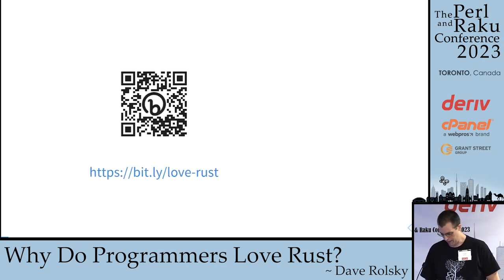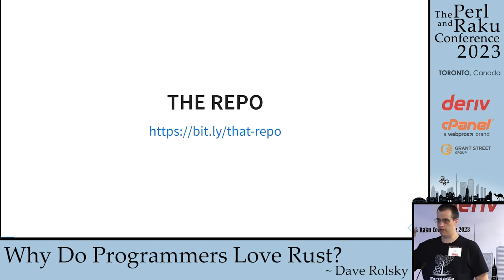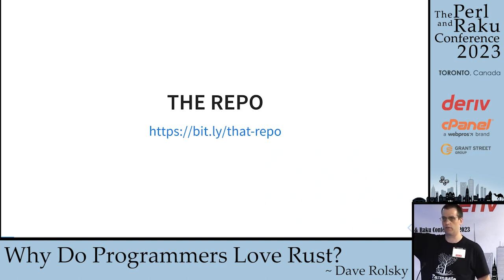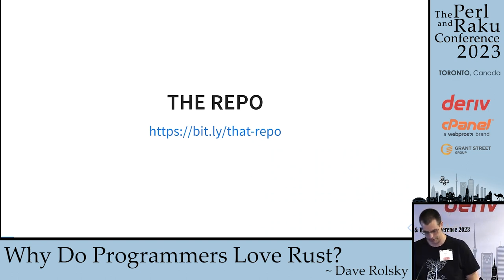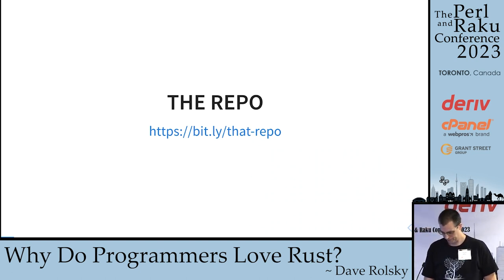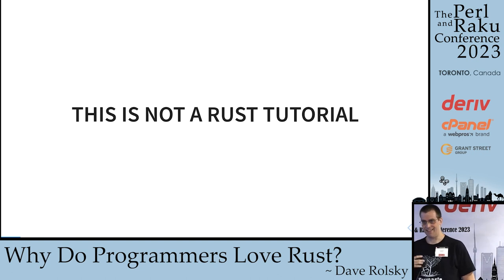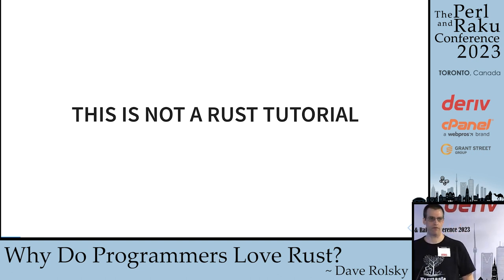There's also a link to the repo: bit.ly/that-dash-repo. This has all the code examples. It's my presentation's repo, so scroll down to 'Why Do Programmers Love Rust' and then go to the examples directory.